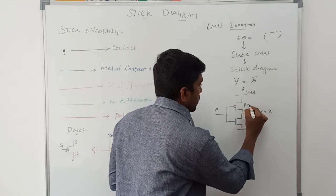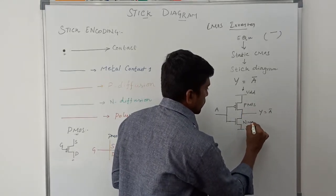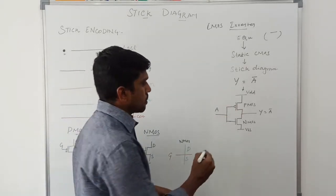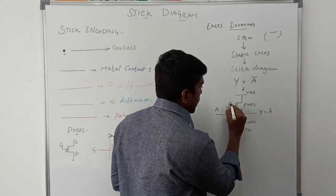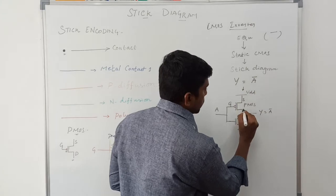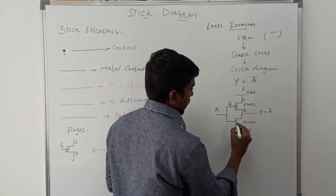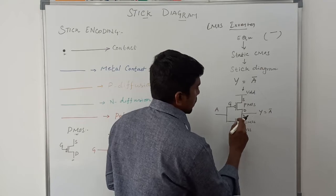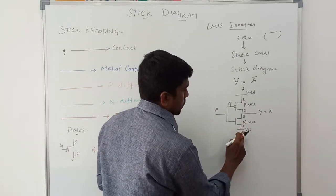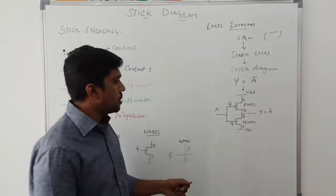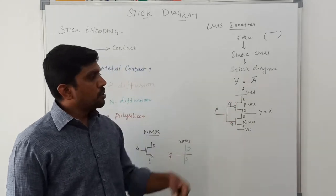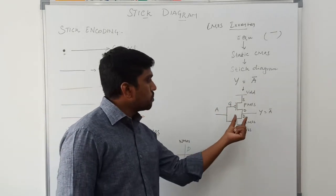Now represent the terminal names. For the PMOS transistor, the middle terminal is the gate, the top is the source connected to VDD, and the other is the drain. For the NMOS circuit, the top is the drain, the source is connected to ground, and the middle terminal is called the gate. This is the single diagram for the CMOS inverter, and now this diagram is converted into a stick diagram.